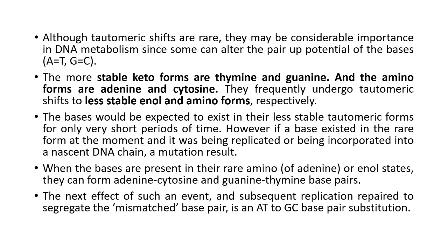The net effect of such an event and subsequent replication to segregate the mismatched base pair is an AT to GC base pair substitution. Therefore, after the first or second replication, it will result in a substitution mutation — that is, in the place of AT, a GC base pair may get substituted.